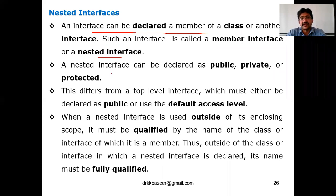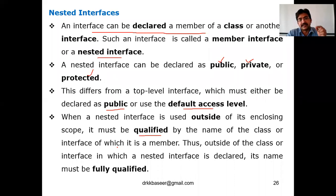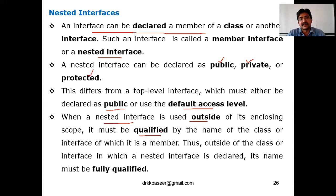A nested interface can be declared with all three access specifiers: public, private, or protected. This differs from a top-level interface, which must be declared as public or use the default access level. When a nested interface is used outside of its enclosing scope, it must be qualified by the name of the class or interface of which it is a member — using a fully qualified name like 'parentInterface.nestedInterface'.